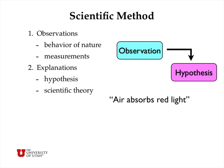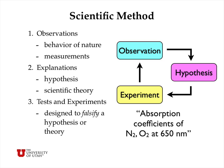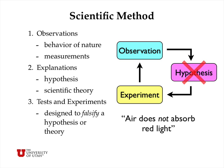An initial hypothesis for our observation that the sky is blue might be that air absorbs red light and allows blue light to come through to our eyes. We can design an experiment — the third part of the scientific method — to measure the absorption coefficient of nitrogen and oxygen, the major components of air, at 650 nanometers, which is in the red portion of the visible spectrum. And if we do that, we can show by experiment that air does not absorb red light to any appreciable extent.